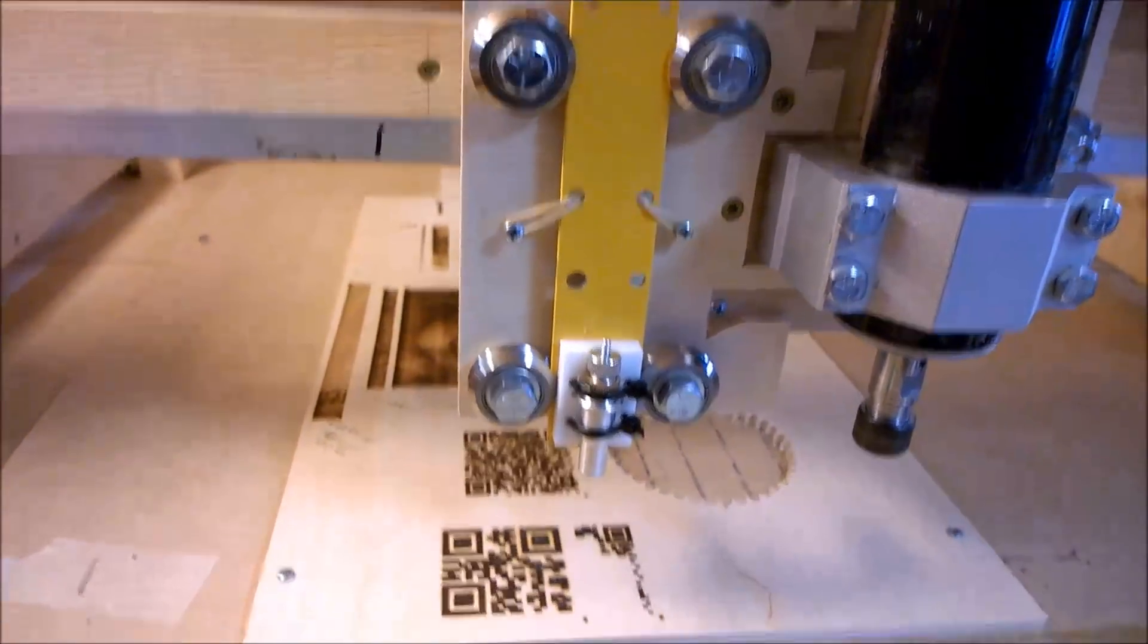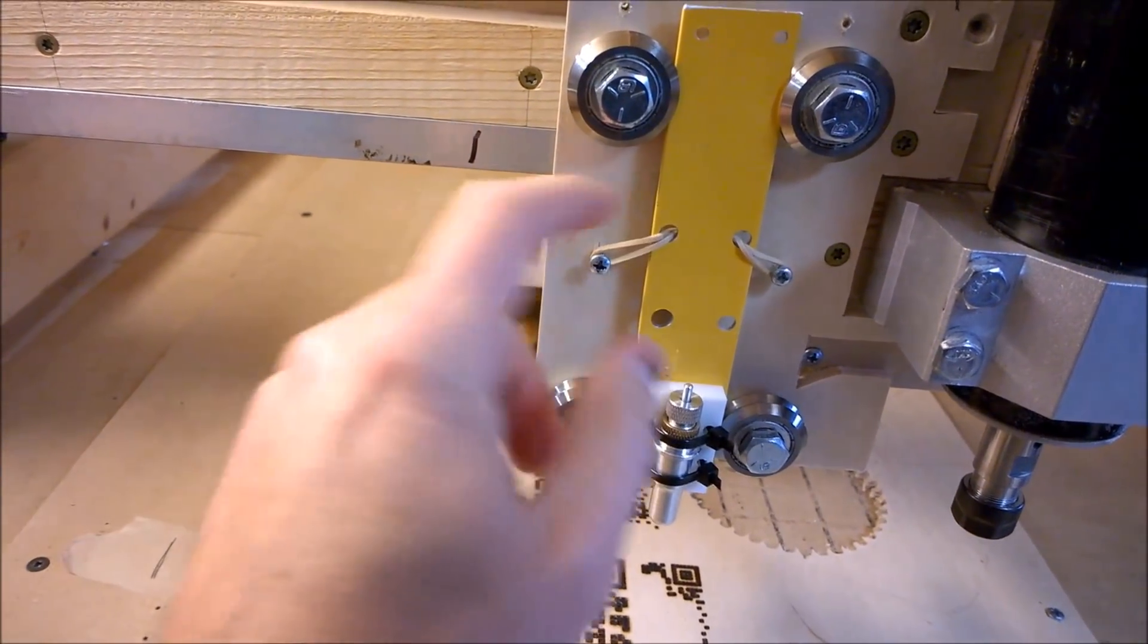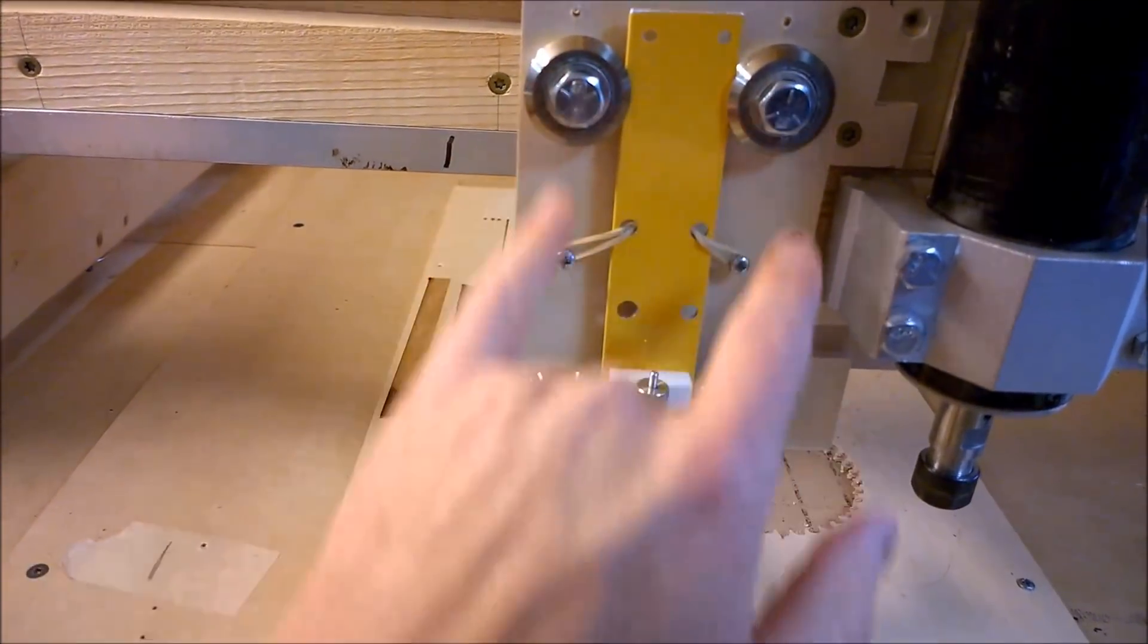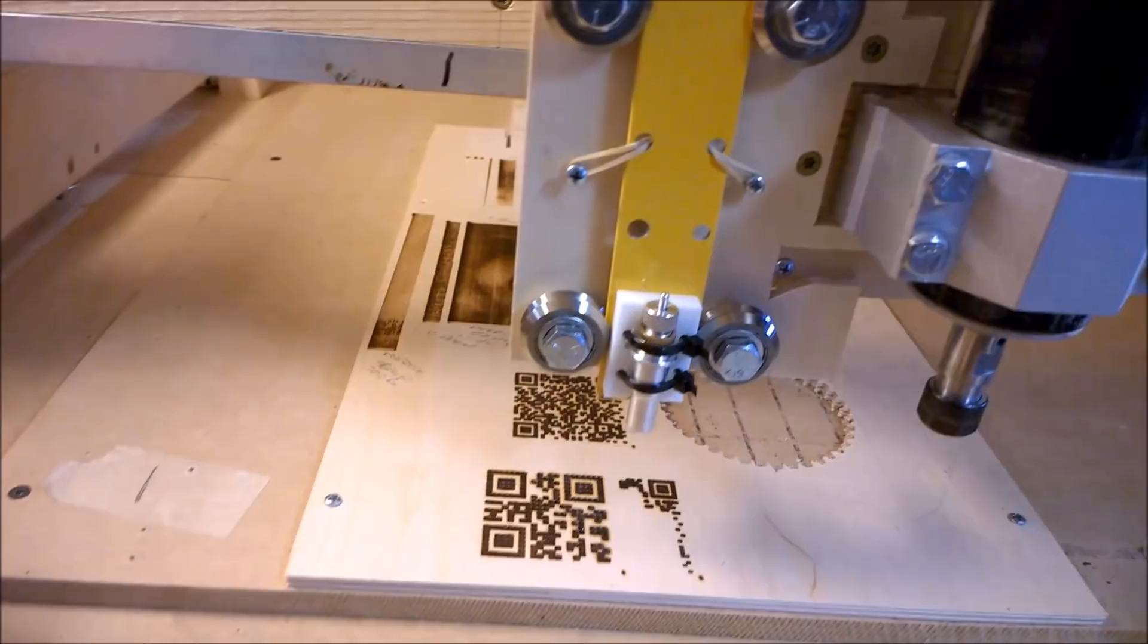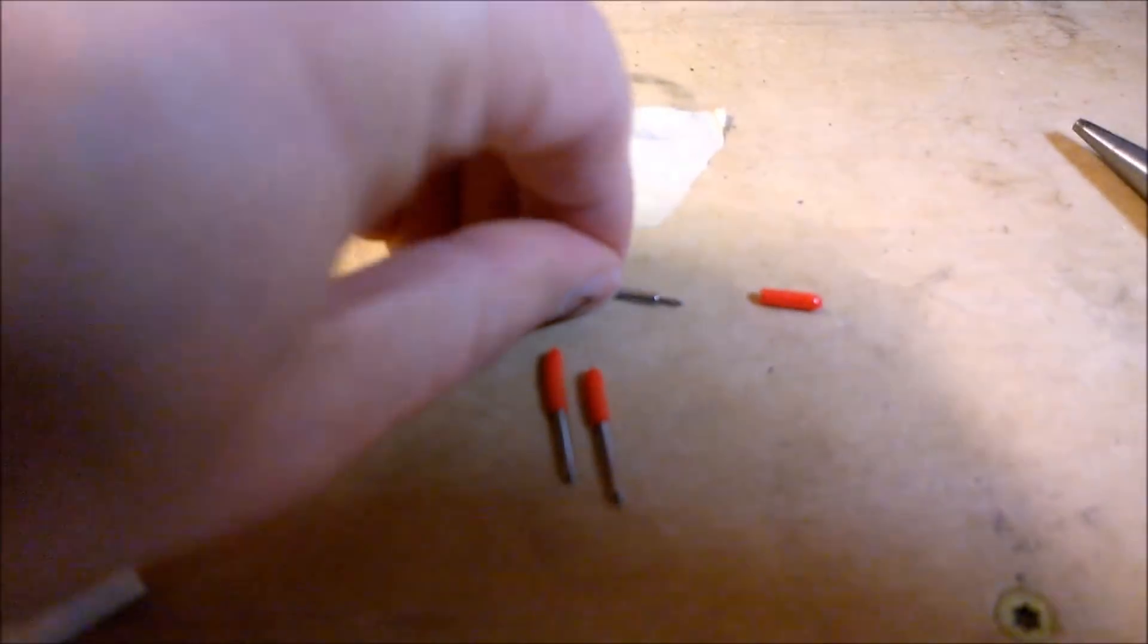That shows the mount holding the real small drag knife cutter. Just got a little bit of pressure, a little bit of downward force from the rubber bands, and this slides between these four rollers.